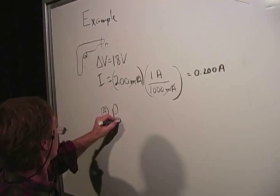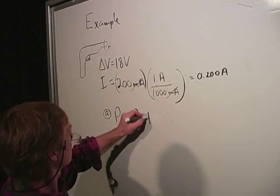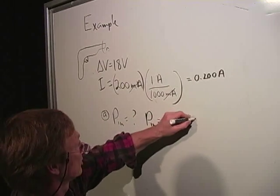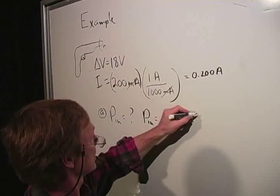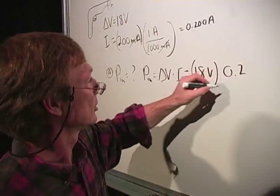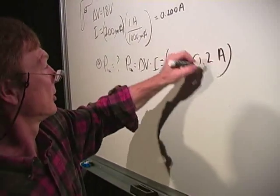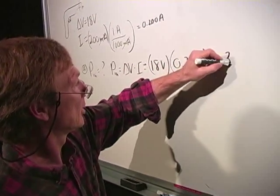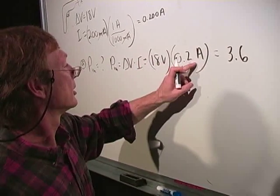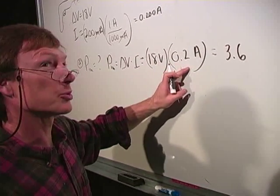What's the input power? Input power is voltage times current, which is 18 volts times 0.2 amps gives you 3.6 joules per Coulomb times Coulombs per second gives you joules per second. That's watts.